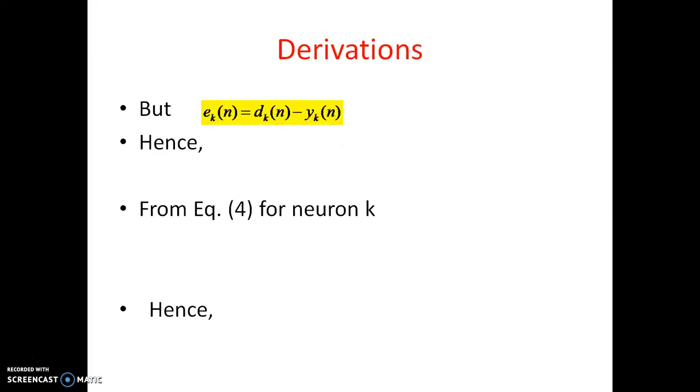So these are the derivations. So the error is produced at kth neuron. So E k of N is equal to Dk of N minus Yk of N. Hence then E k of N, so it is equal to Yk of N is equal to phi k of Vk of N. As we know from Vk of N to Yk of N there is an activation function and that activation function is the kth activation function. So obviously it will be phi k simply. And hence the derivative term is dou E k of N by dou Vk of N is equal to minus phi dash k of Vk of N.